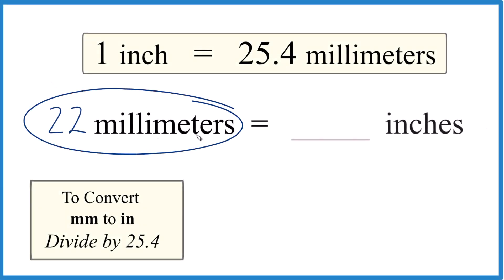If you have 22 millimeters here and you want to get that to inches, here's how you do it. When we go from millimeters to inches, we're going to divide by 25.4.